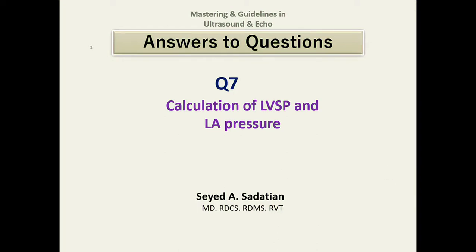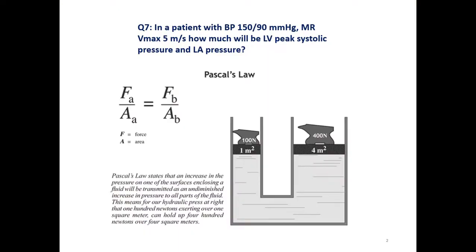Welcome to Mastery and Guidelines in Ultrasound and Echo. Question 7: calculation of left ventricular systolic pressure and left atrial pressure by knowing blood pressure and mitral regurgitation velocity. In a patient with systolic blood pressure 150 over 90 mmHg and Vmax MR of 5 meters per second, how much will be the left ventricular peak systolic pressure and left atrial pressure?